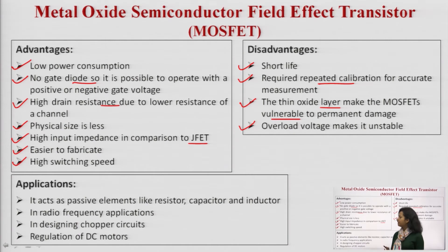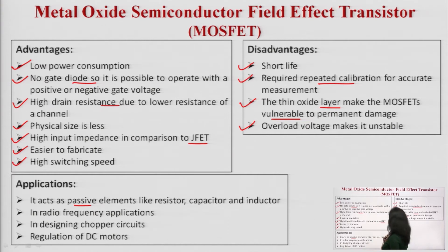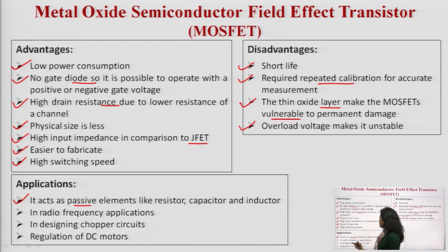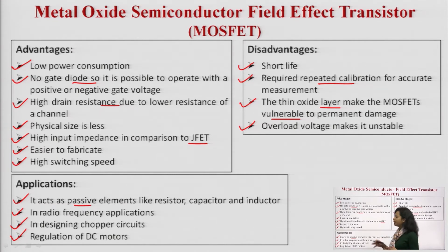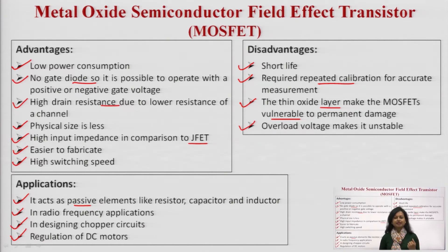Some common major applications: MOSFET acts as a passive element — it can be connected as a passive element like a resistor, capacitor, or inductor. It can be used in radio frequency applications, designing chopper circuits, and regulation of DC motors. There is a huge list of applications where MOSFET can be used, so it is a commonly used component and you must be able to explain its working and draw the characteristic curves.